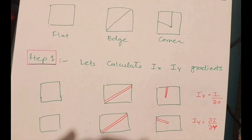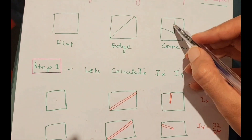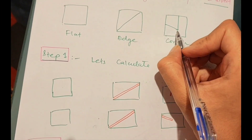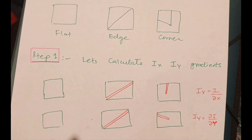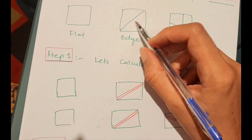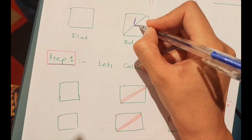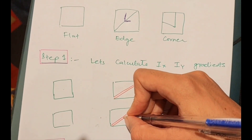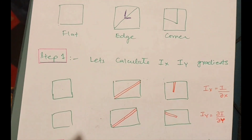For the corner, taking the derivative with respect to the x-axis gives high intensity in that direction. Taking the derivative along the y-axis also gives high intensity. For a diagonal edge, there are two components — an x-component and a y-component — so we can take the gradient about both axes. If it were a horizontal or vertical edge, changes would only appear in one gradient direction, not both.